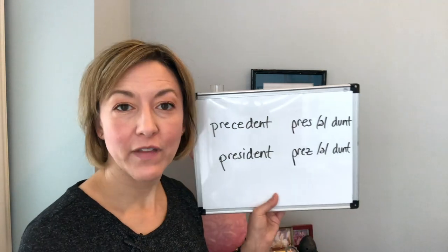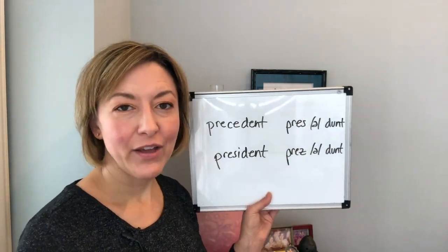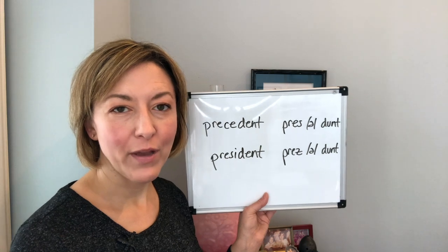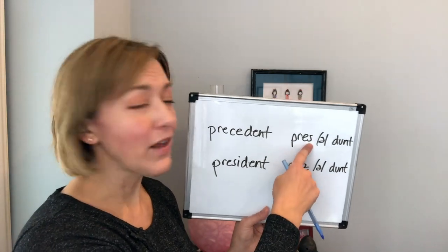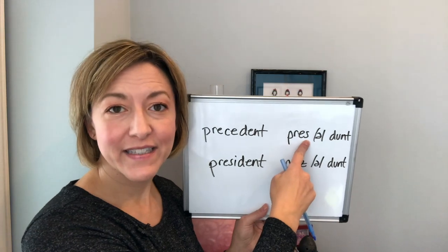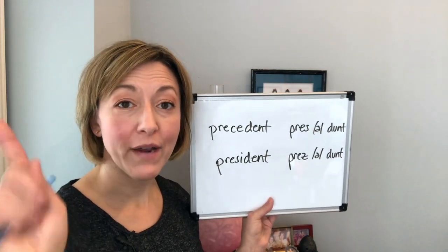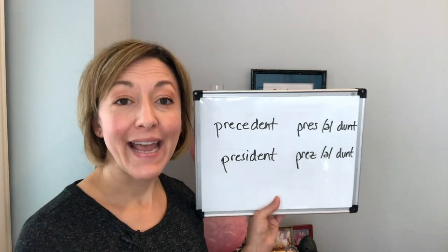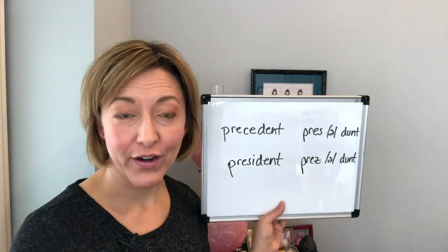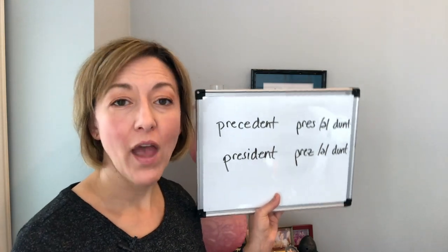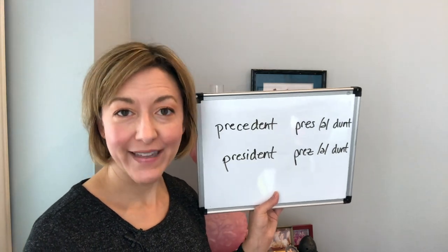To make the S sound, your mouth is going to be open and the tongue is about the middle of the mouth. The tip of the tongue points down to the bottom of the mouth, and the voice box is not on — air is going to be moving out of your mouth: 'press, press.'